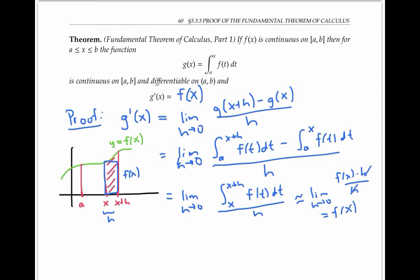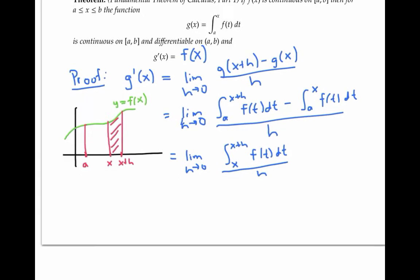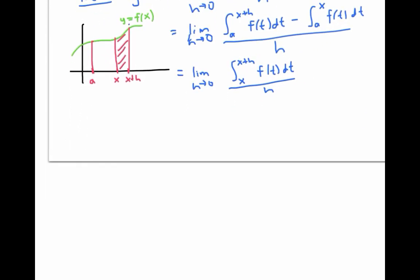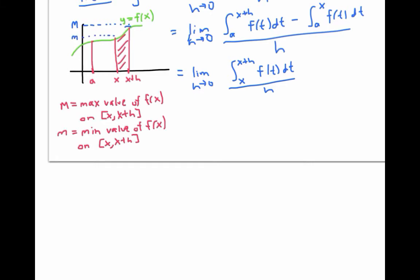But let's make this argument a little more precise. Let's let capital M be the maximum value that f of x achieves on this little sub-interval, and lowercase m be the minimum value achieved. In this picture, they occur on the endpoints of the interval from x to x plus h, but they could also occur somewhere in the interior. We know that f of x does have a minimum and maximum value, since it's a continuous function by assumption on a closed interval.